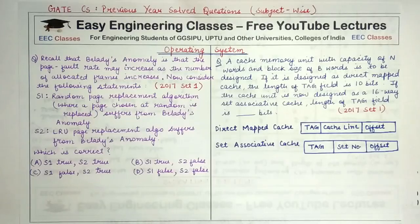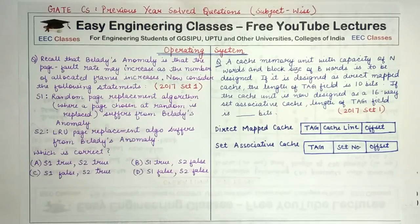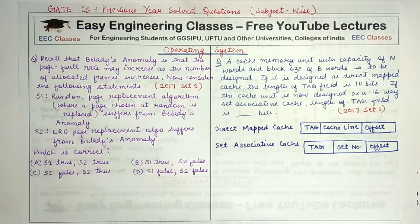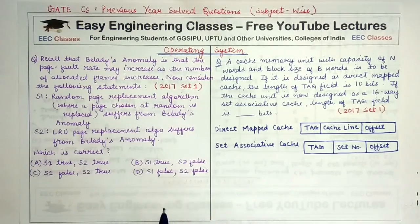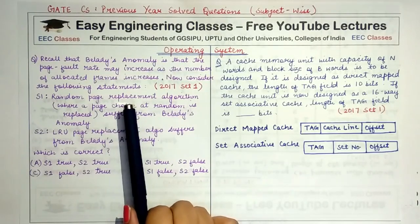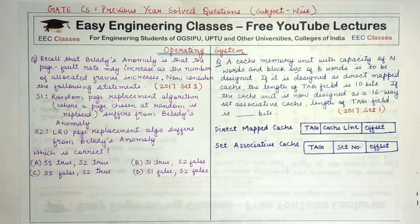Hello everyone, welcome to Easy Engineering Classes. We are continuing with our preparation for GATE Computer Science Engineering and Information Technology, solving previous year questions subject-wise. Today is Operating Systems day and we'll solve two questions: one related to Belady's Anomaly and the other related to set associative cache. Starting with Belady's Anomaly.